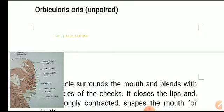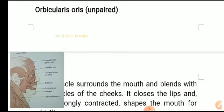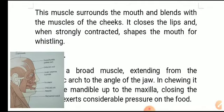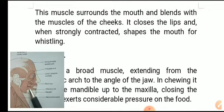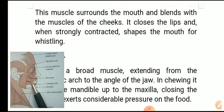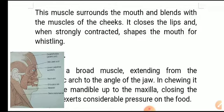Orbicularis oris (unpaired): this muscle surrounds the mouth and blends with the muscles of the cheek. It is a single muscle, not found in pairs. It closes the lips and, when strongly contracted, shapes the mouth for whistling.